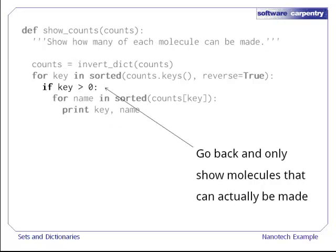And here's one afterthought. Let's go back to our show counts function and only print out molecules that we can actually make, i.e. ones whose counts are greater than zero. If we have a lot of possible molecules in our database, but not much inventory, this will save us a lot of less than useful output.